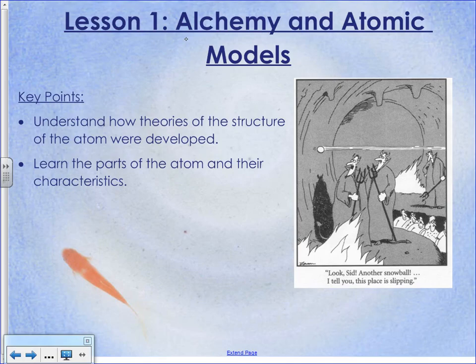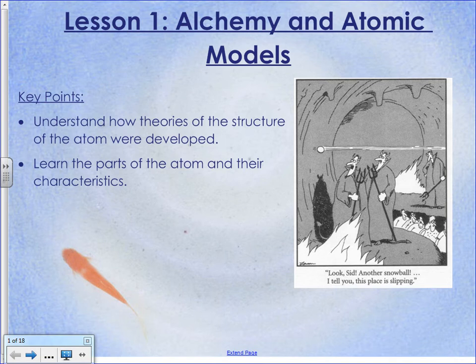Today we're going to start looking at essentially the simplest part of the chemistry unit, which is the atom - what essentially all matter is made up of. We have to look at its structure, its parts, and how it works, because that's the basis of everything else we're going to talk about in this unit: why compounds form, why certain compounds do certain things while others don't. We start out with the simplest part and build from there.